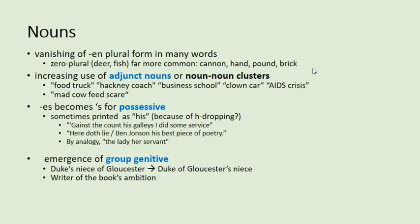We see an increasing use of what are called adjunct nouns or noun-noun clusters. This is not something you see much in Middle English at all, but it starts exploding in early modern English. Examples: food truck, hackney coach, business school — not 'the school of business' or 'the truck of food' — but two nouns put together. In modern German these just get combined into one word, so maybe there's something of the old Germanic tendency towards compounding here. You can even get a compound of a compound: 'mad cow feed scare' — 'mad cow' is a noun, 'feed' is a noun, 'scare' is a noun, all clustered together.